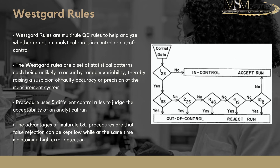If there are not two such values, you then check the R4s rule. This means comparing the current value with the previous one: if the previous value was at minus 2s and the current is at plus 2s, the two values are four standard deviations apart. If that condition is met, you also reject the run.